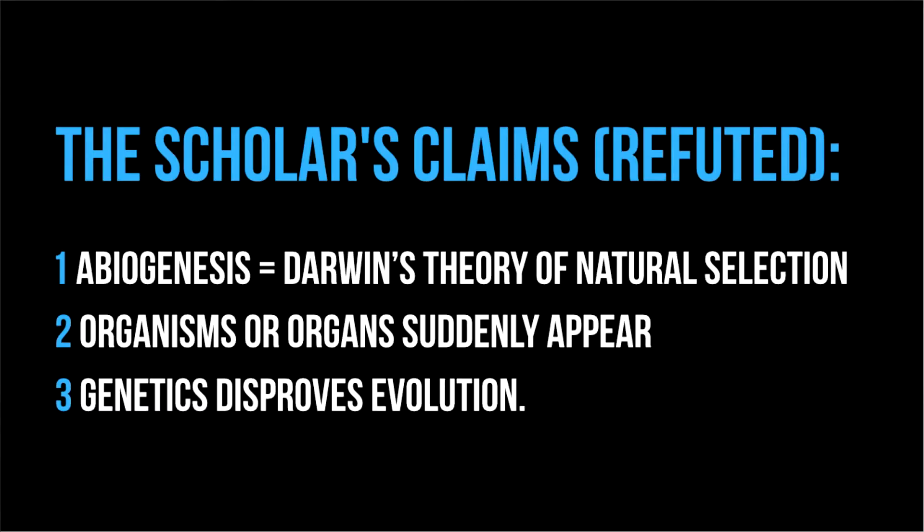We already responded to three claims by the scholar. The first one was that abiogenesis and Darwin's theory of natural selection were the same. Number two, organisms or organs suddenly appear. Number three, genetics disproves evolution. All these claims were refuted with scientific evidence. You can watch part one of this series to see how these arguments were refuted.